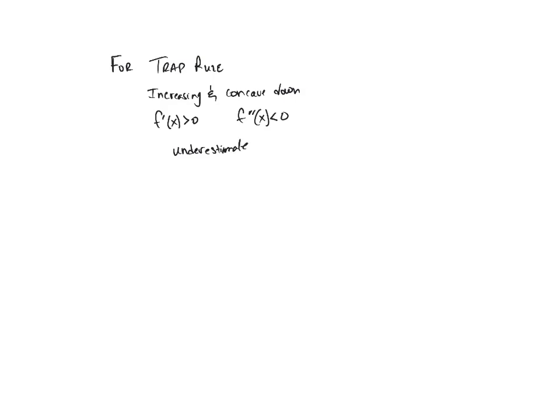Next, what if it's increasing and concave up? Here's increasing, but this time I'm concave up. This means f prime of x is greater than 0, concave up f double prime of x is greater than 0. This will give me an overestimate.